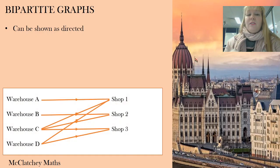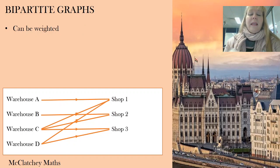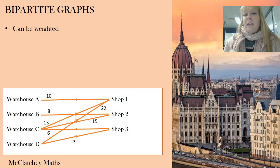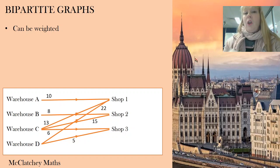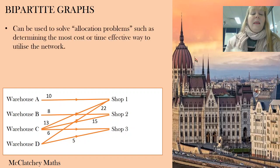We can also show bipartite graphs as directed. For example, here we've got a diagram of some warehouses delivering to some shops — warehouses aren't delivering to one another, and shops aren't doing any deliveries, which is why they are two completely separate groups. Bipartite graphs can also be weighted, and weightings are usually represented as numbers. They could represent costs to deliver from one store to another, or the kilometres between the store and the warehouse.